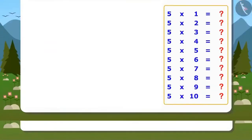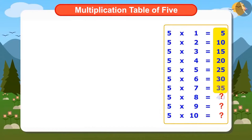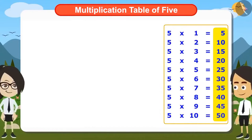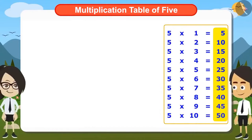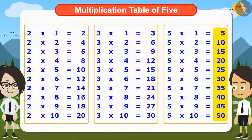Today we have learned the multiplication table of 5 and also got to know that to find the multiplication table of large numbers, you can use the multiplication table of small numbers, like Vandana used the multiplication tables of 3 and 2 to find out the multiplication table of 5.